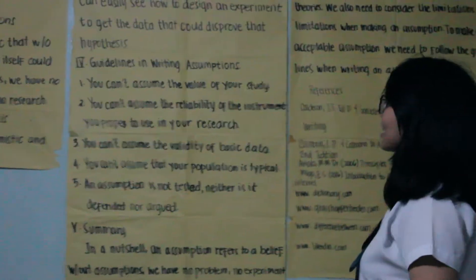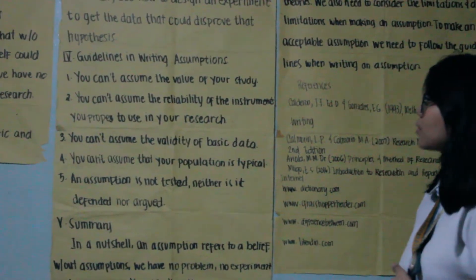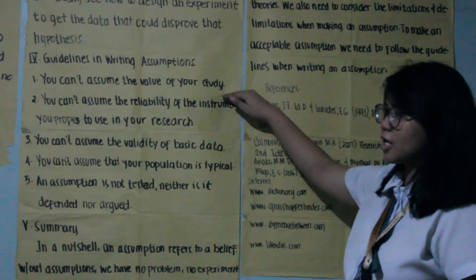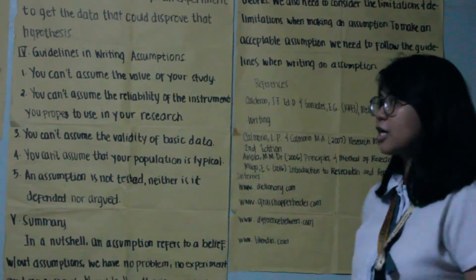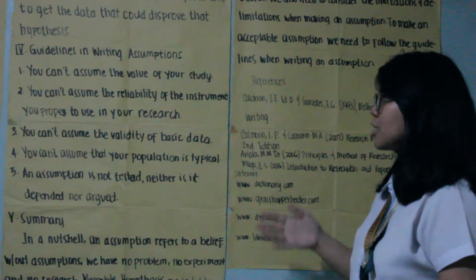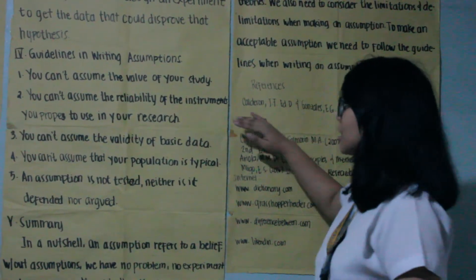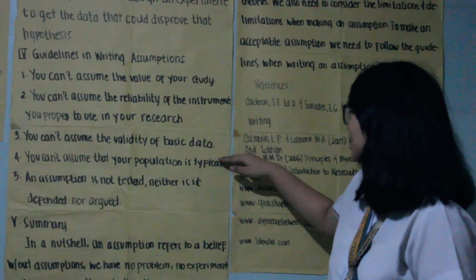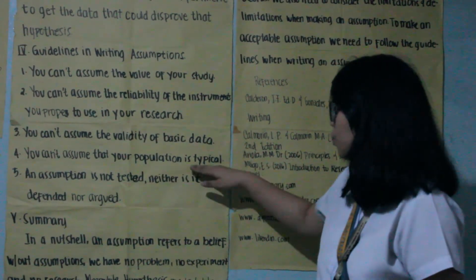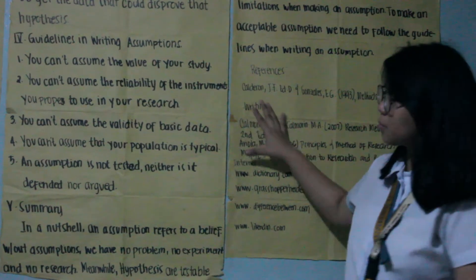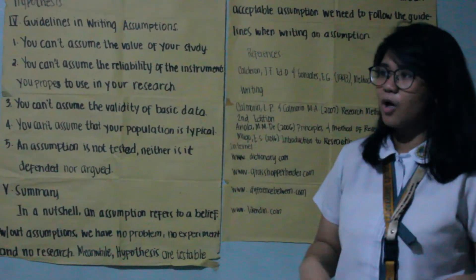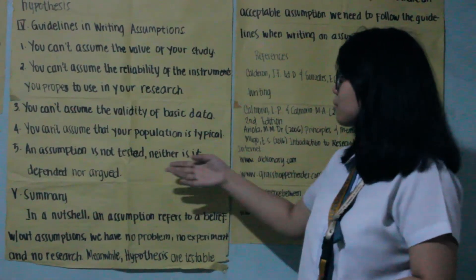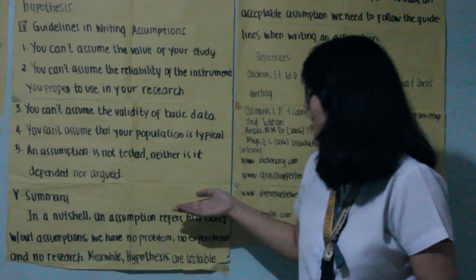The guidelines in writing assumptions: First, you can't assume the value of your study, because of the significance of the study — it is worth studying based on your assumptions. Next, you can't assume the reliability of the instrument you propose to use in your research, nor the validity of the basic data, nor that the population is typical, as this is based on the methodology of the study. The last guideline is that an assumption is not tested, neither defended nor argued.